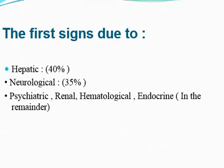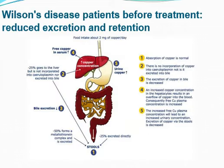The first sign that usually appears involves the hepatic system in 40% of cases, neurological manifestations in 35% of cases, and may involve psychiatric, renal, hematological, and endocrine disorders. This shows a patient before treatment with reduced excretion and retention of copper, as already discussed.